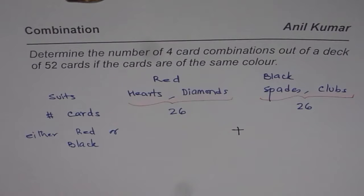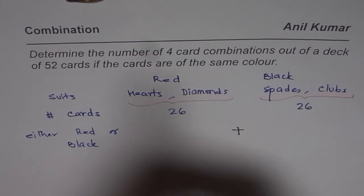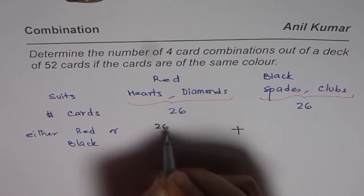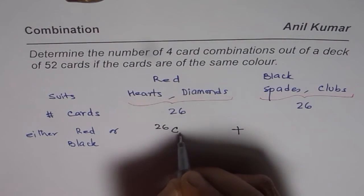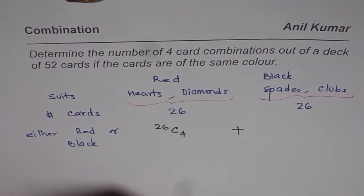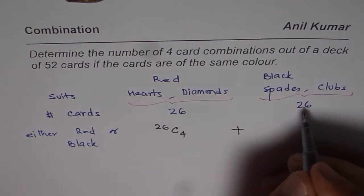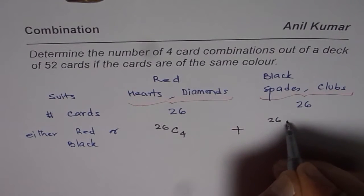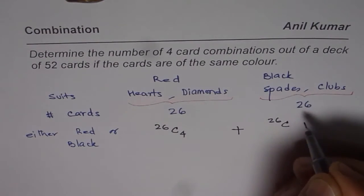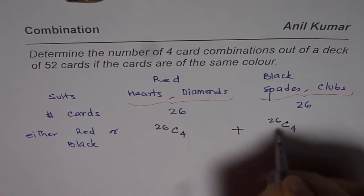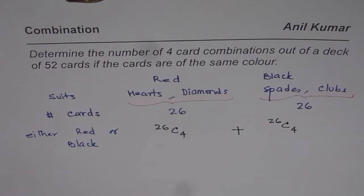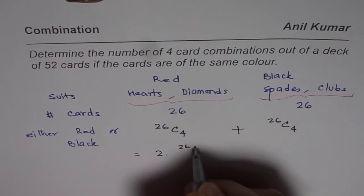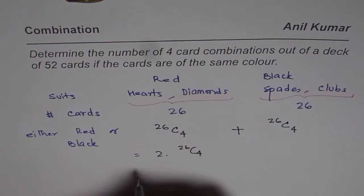What we need to calculate: we could draw 4 out of 26 red cards, so that is combination of 26 taken 4, written as 26C4. And here also, drawing all 4 black means there are 26 black cards out of which you draw 4 cards, giving another 26C4. So when you add this up, you get 2 times 26C4 as your answer.